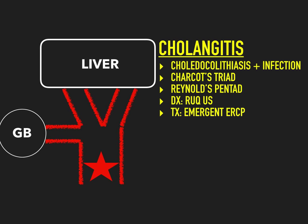You will always have Charcot's triad: fever, jaundice, and right upper quadrant pain. They're always going to give you Charcot's triad on the physical exam. The fever and right upper quadrant pain are from the inflammation, and the jaundice is for the same reason as in choledocholithiasis — it's an obstructive jaundice again.